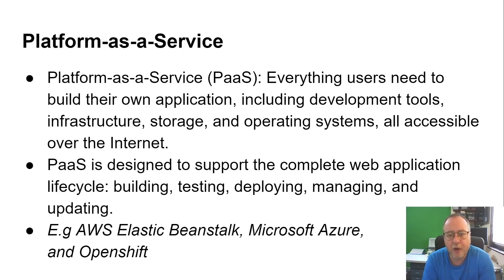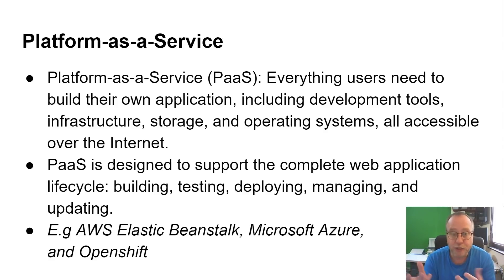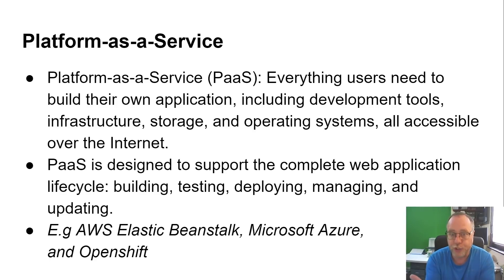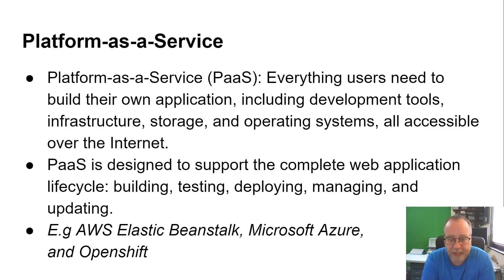After Software as a Service, you get Platform as a Service. This is more for when you want to build your own application. The cloud provider gives you an operating system with storage, memory, and networking, but also all the development tools — a web server, middleware, Java, PHP, JavaScript, back-end databases. It provides the complete web application lifecycle: building, testing, deploying, managing, and updating. So if you're launching your own service but you just want somewhere to put it and have them worry about everything else, this is what you need. Examples include Amazon's Elastic Beanstalk, Microsoft Azure, and OpenShift.